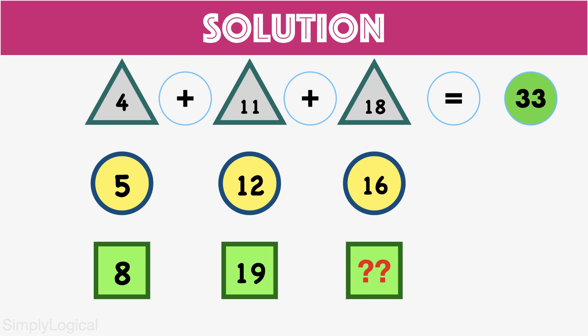In the second row, the sum of numbers in the circles is 5 plus 12 plus 16 equals 33. So according to the logic, the sum of numbers inside the same geometrical figures is 33.